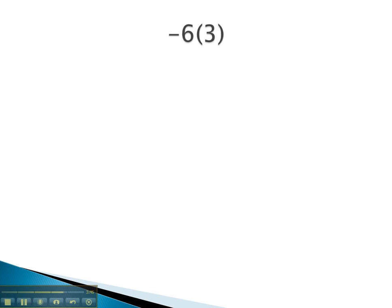Let's do one more: negative 6 times 3. Notice we have a positive times—oh, I'm sorry—a negative times a positive. Because we have different signs, the answer is negative. And 6 times 3 is 18, so we get negative 18 for our solution.